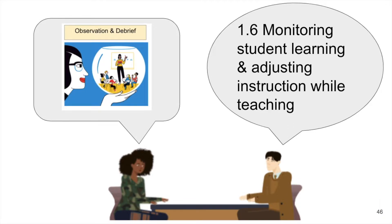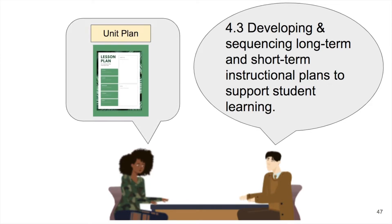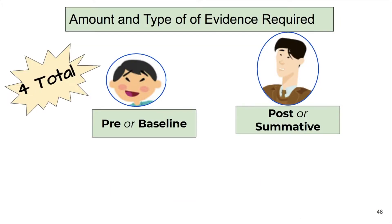However, if the goal is 4.3 — developing and sequencing long-term and short-term instructional plans to support student learning — a unit plan may capture the evidence better to show progress in this goal. For each goal cycle, four pieces of evidence must be linked.